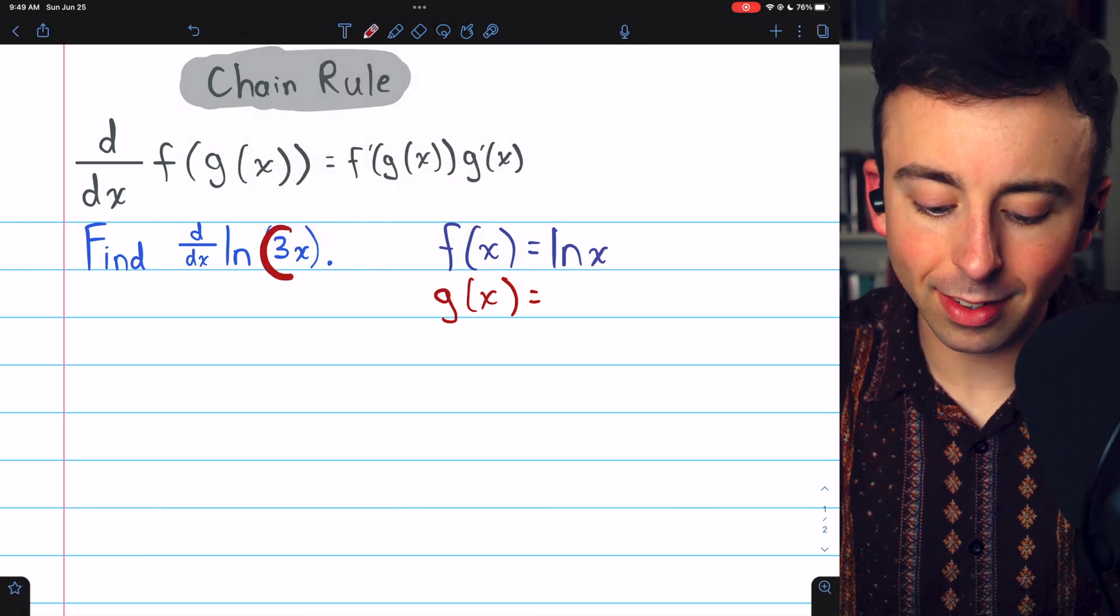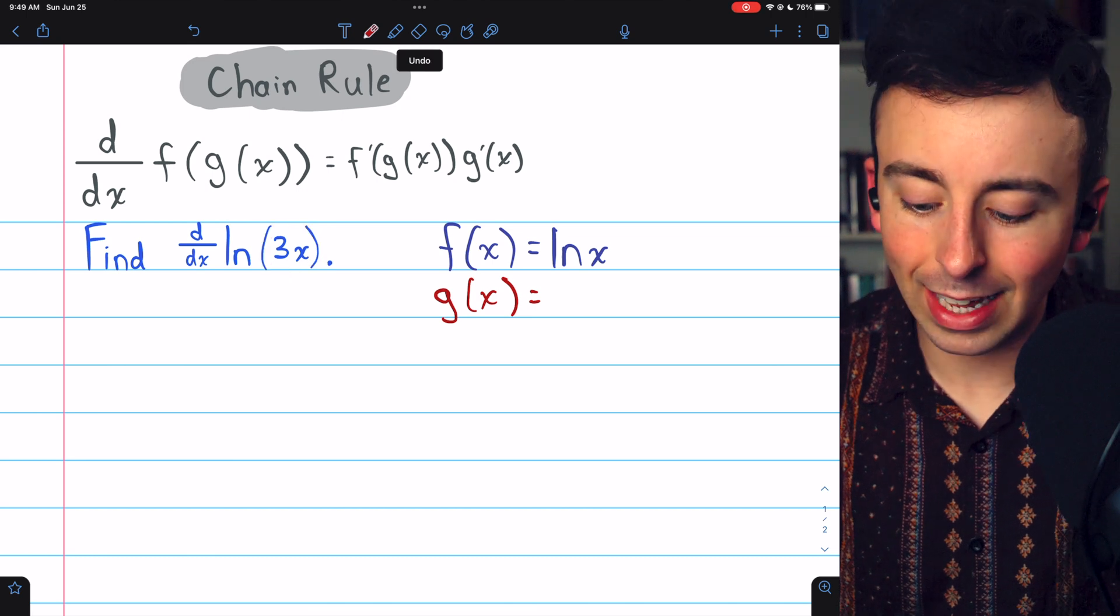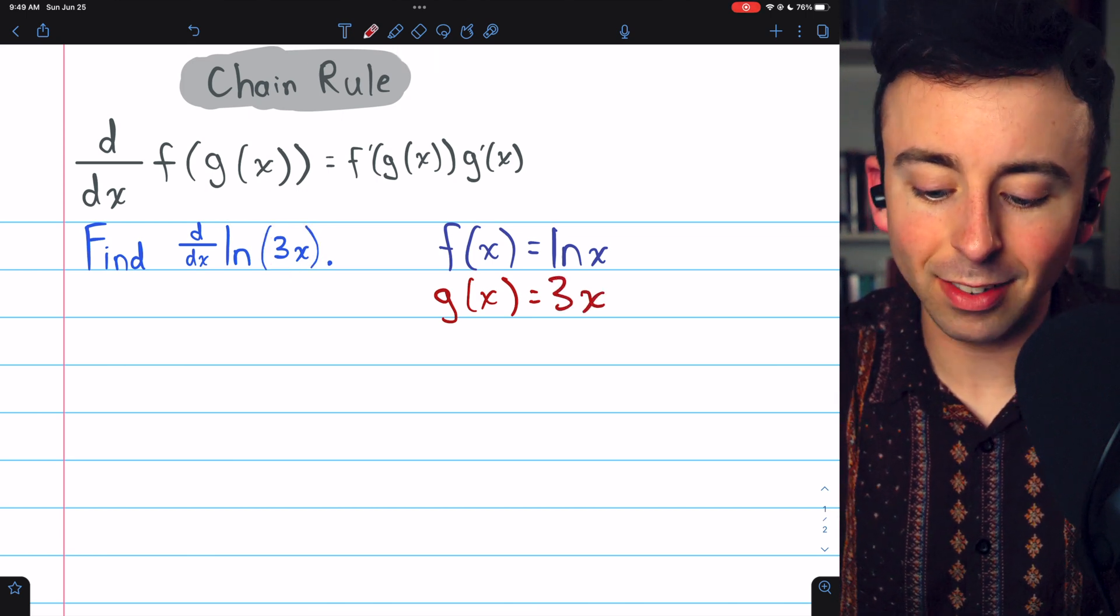The inside function, g of x, is the thing that's inside the ln. In this case, that is 3x.